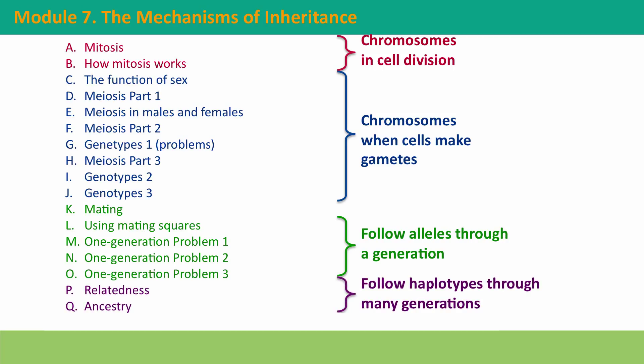And then we'll spend a couple of lectures thinking about ancestry — thinking about how alleles and combinations of alleles are passed from one generation to another, to another, to another in our history. And finally, we'll come back to the process of meiosis to think about how it is special for the sex chromosomes.